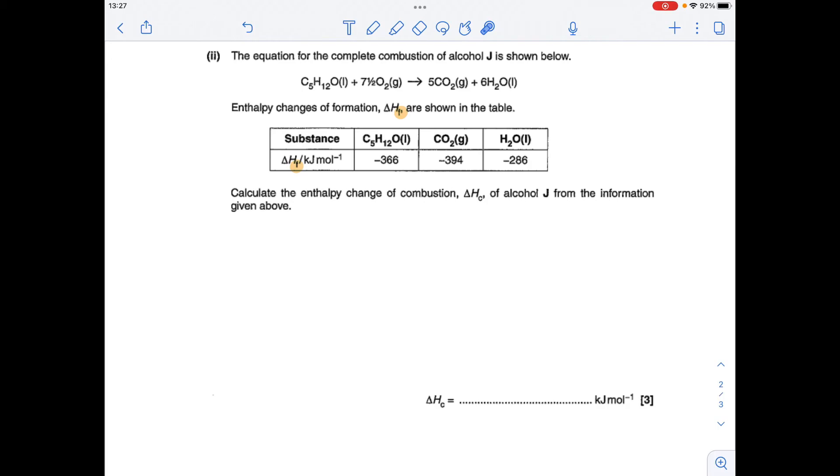So for the final part of the question, we've got to calculate the enthalpy change of combustion of alcohol J using enthalpy changes of formation. So you can see I've highlighted the little F there, just to make this point. When you're calculating an enthalpy change for a reaction - this one just happens to be combustion - if you're using delta H F values, enthalpy changes of formation, the enthalpy change for the reaction is the sum of the enthalpy change of formation of the products minus the sum of the enthalpy changes of formation of the reactants.